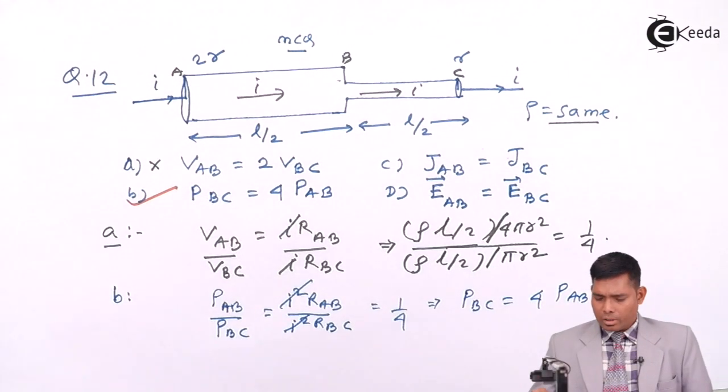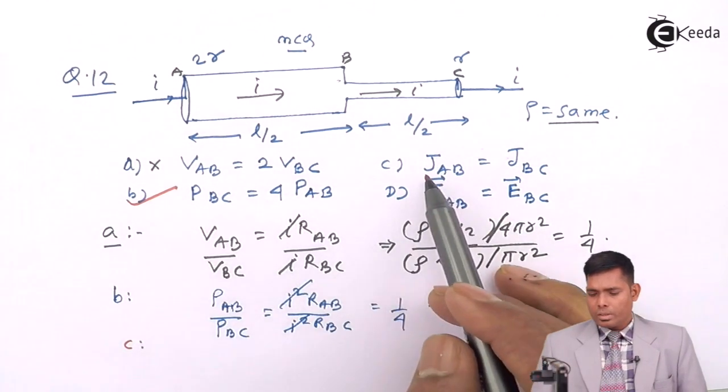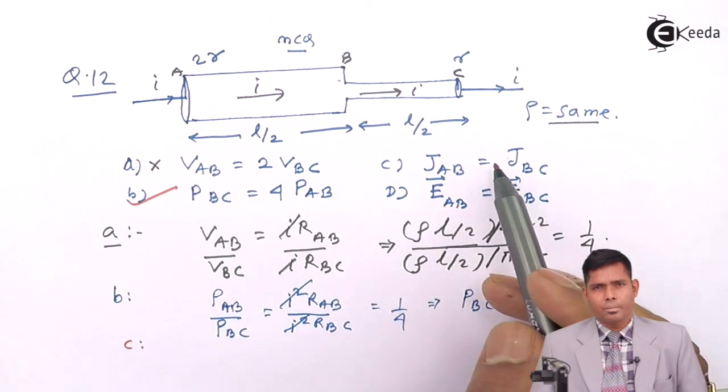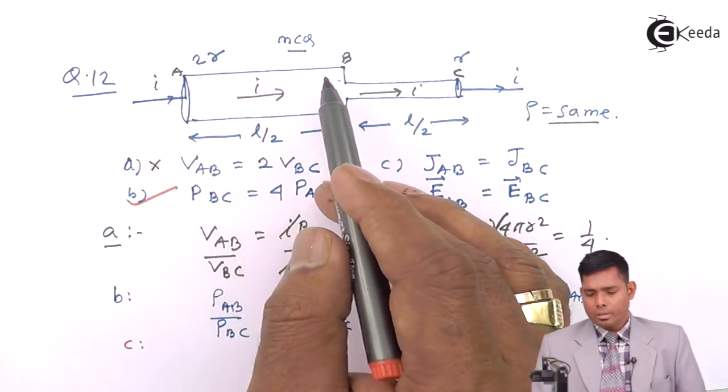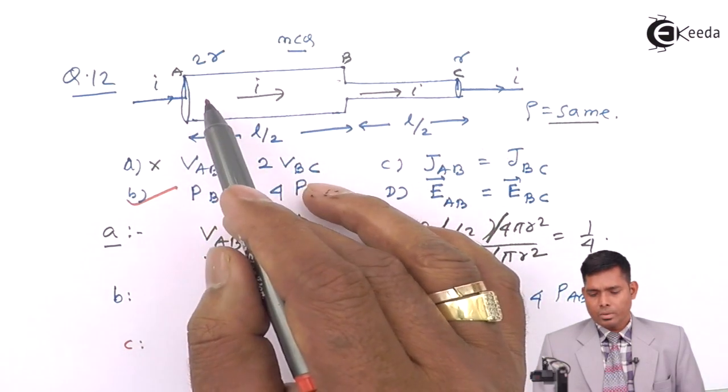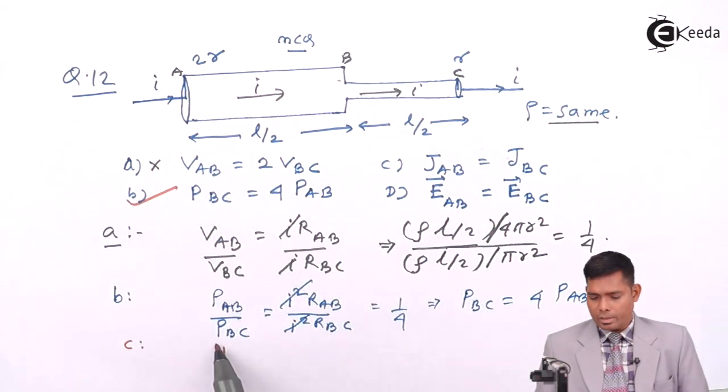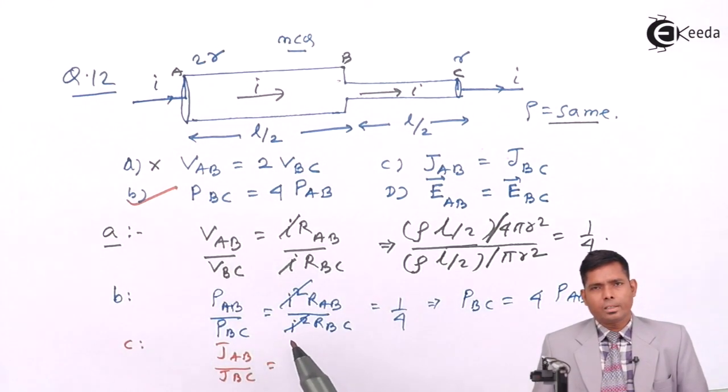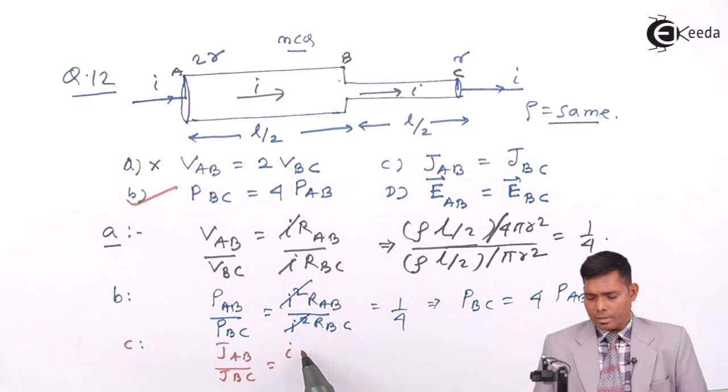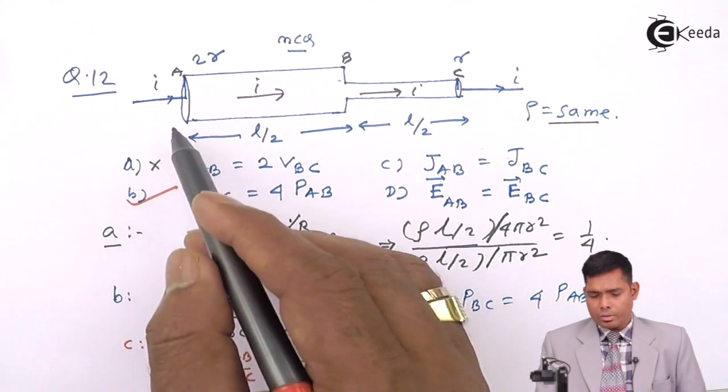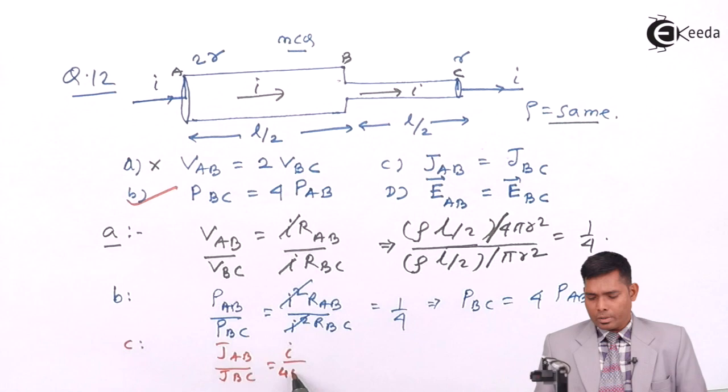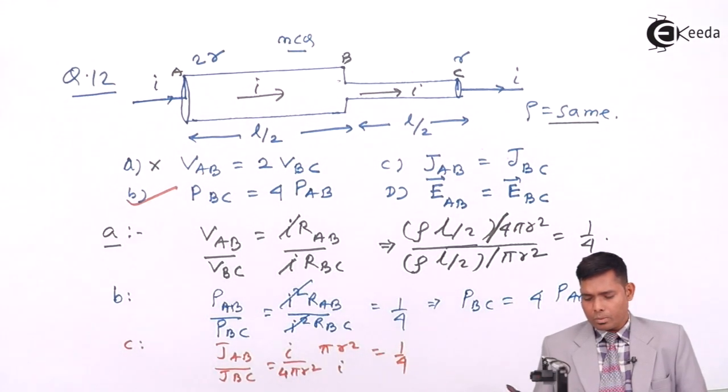Let us check option C. C says that the current densities are same. What is the current density? Current density is the current flowing per area. So current density over AB divided by current density over BC. Current density is I/A. I is same, so I will cancel. Area of this part is 4πr² divided by πr². That also comes to be one by four. So that is not correct.